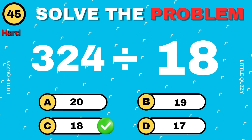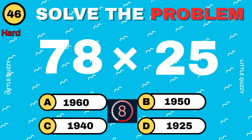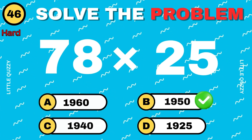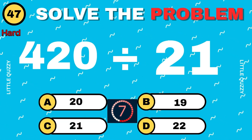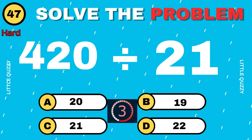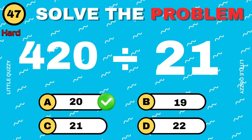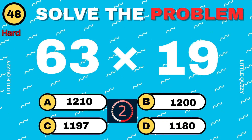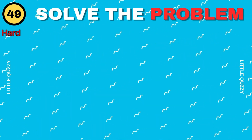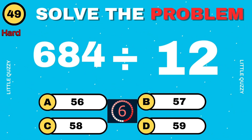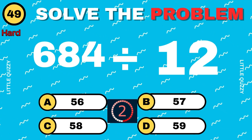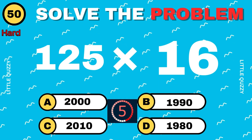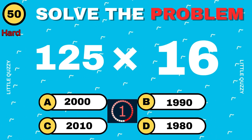What is 78 times 25? What is 420 divided by 21? Correct answer: 20. What is 684 divided by 12? The answer is 57. What is 125 times 16? The final answer is 2000.